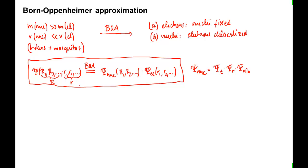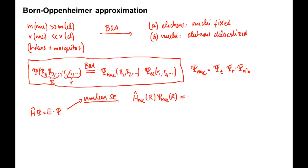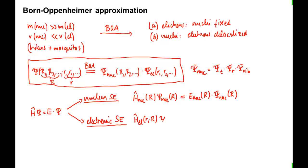The consequence of writing the wave function as a single product is that the overall Schrödinger equation can be separated. The overall Schrödinger equation is Ĥ operating on Ψ equals E times Ψ. It separates into a nuclear Schrödinger equation, Ĥ_nuc(R) operating on ψ_nuc(R) equals E_nuc(R) times ψ_nuc(R), and an electronic Schrödinger equation, Ĥ_el(r, R) operating on ψ_el(r, R) equals E_el(R) times ψ_el(r, R).